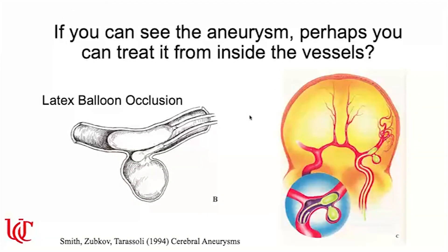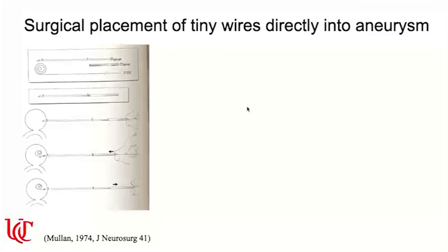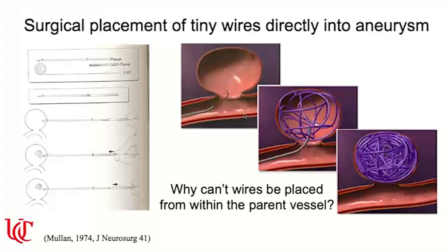If you can see the aneurysm, maybe you can treat it from inside the blood vessels. Some of the first approaches used latex balloons that were floated into the aneurysm — sometimes with the help of a second balloon — inflated, and then detached, blocking off the aneurysm. Some surgeons were also placing tiny wires directly into aneurysms by poking a hole and threading wires in until the aneurysm was completely filled. This raised the question of whether such wires could be placed from within the parent vessel — leading to the concept of coiling from within.